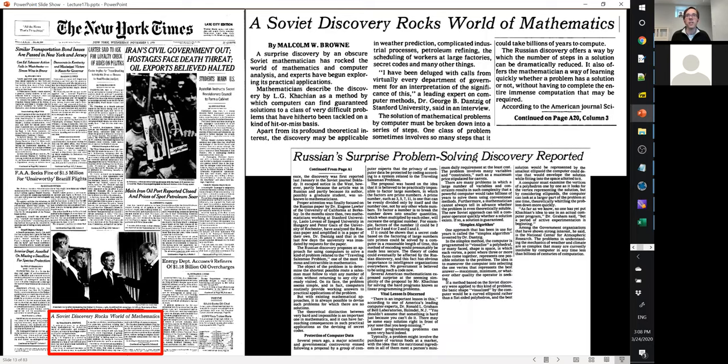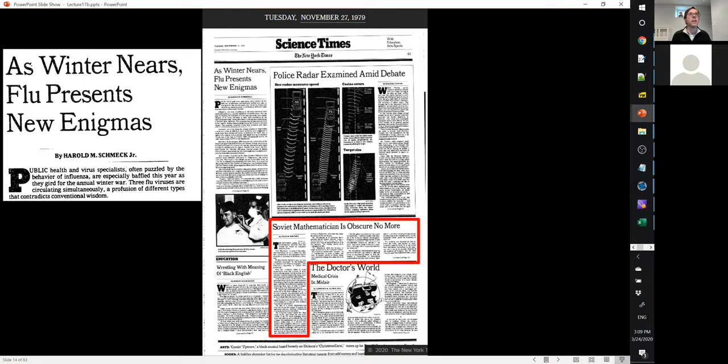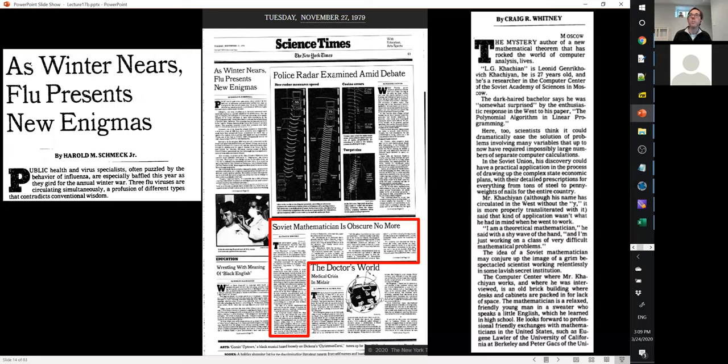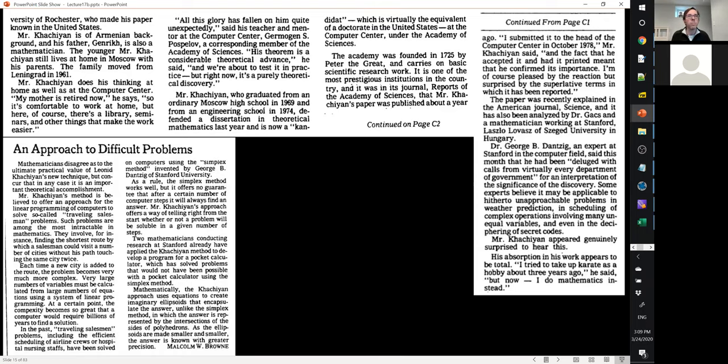I thought it was a little bit funnier to show a follow-up article from, I think, a month later—or even less than a month later. This is from Tuesday, November 27, 1979, front page of the Science section: 'Soviet Mathematician Is Obscure No More,' it says. That's the top story. It starts out by talking about the mystery author of a new mathematical theorem, and the dark-haired bachelor says he was somewhat surprised by the enthusiastic response, and so forth. It ends by saying his absorption in his work appears to be total: 'I tried to take up karate as a hobby about three years ago,' he said, 'but now I do mathematics instead.' Good times.